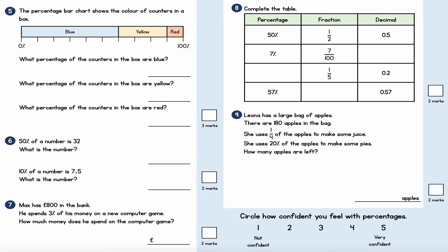This is question number five. The percentage bar chart shows the colour of counters in a box, from zero to 100 percent. What percentage of the counters are blue? It goes up to 60 percent. So the answer is 60 percent — remembering that percent means out of 100. What percentage are yellow? It goes to 90, so 90% minus 60% tells me how much is yellow — the answer is 30 percent.